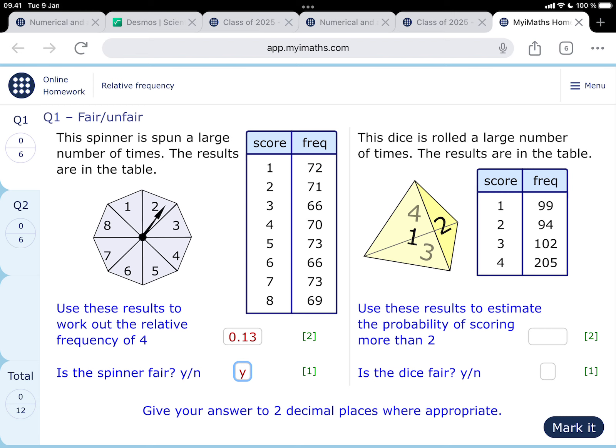So immediately I'm saying no, that one's not fair if you're throwing it 500 times and you're getting twice as much of one thing as any of the others. So it's an oddly unfairly balanced object. Use these results to estimate the probability of scoring more than two. Okay, so more than two means three or four. So that's happened 102 times for three and 205 times for a four.